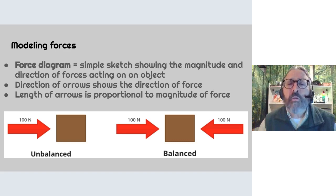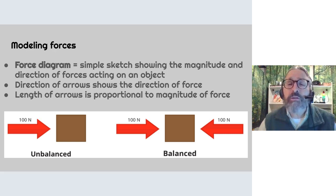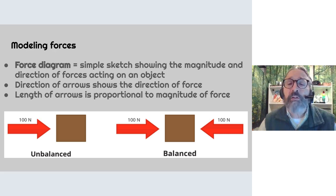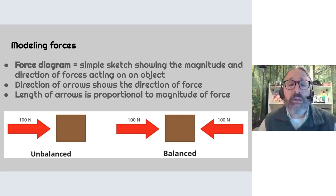If we want to model forces, remember, a force diagram is a simple sketch showing the magnitude and direction of forces acting on an object. The direction of arrows shows the direction of the force, and the length of the arrow is proportional to the magnitude.